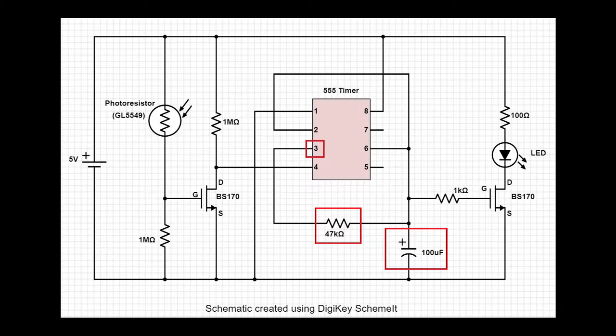Once the capacitor voltage goes above two thirds of the input voltage, pin 6 will detect that and turn the output at pin 3 back to low. The capacitor will then begin to discharge through the 47 kiloohm resistor and the voltage will go back down and the cycle just repeats.